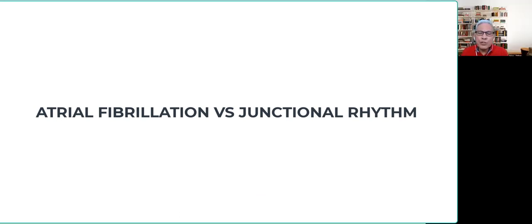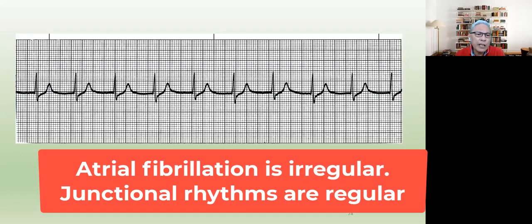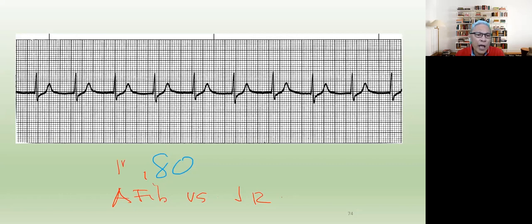What is the difference between AFib and junctional rhythm? AFib versus junctional rhythm. All right. AFib is irregularly irregular, and this one is regular.